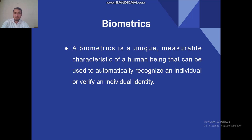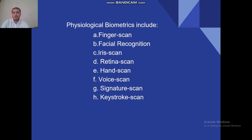First is Biometrics. Biometrics is a unique, measurable characteristic of a human being that can be used to automatically recognize an individual or verify an individual's identity. By biometrics we can identify a human identity easily. Biometrics are of many types like finger scan, facial recognition, iris scan, retina scan, hand scan, voice scan, signature scan, and keystroke scan. These all are biometrics from which we identify a person.